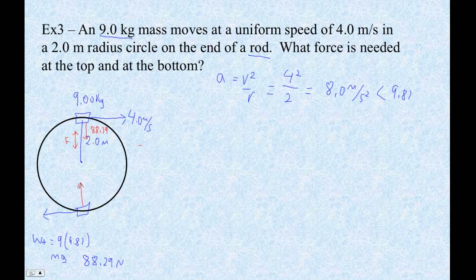Here, of course, we know the force is going to be upward. It's always upward at the bottom. So here's our force, unknown force. We know gravity is down 88.29.